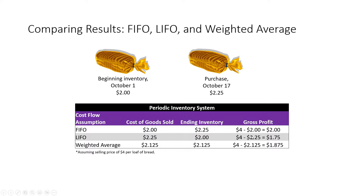I also have gross profit listed. Gross profit or gross margin — same thing — is sales minus cost of goods sold. I'm going to assume the selling price for the loaf of bread was $4. So FIFO gross profit would be $4 selling price minus $2 cost of goods sold, giving a gross profit of $2. LIFO: $4 selling price minus $2.25 cost of goods sold is a gross profit of $1.75. Weighted average: $4 selling price minus $2.125 gives a gross profit or gross margin of $1.875.